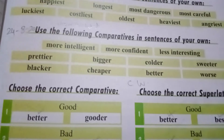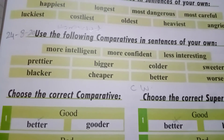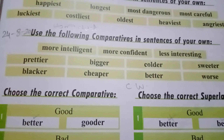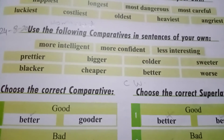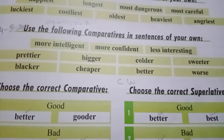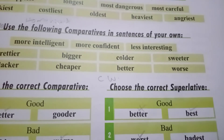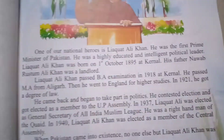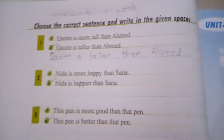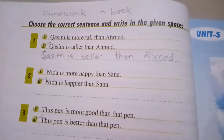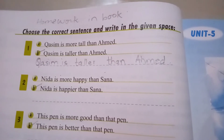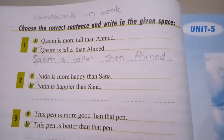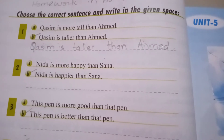In the same way, you will make sentences of these words. I have shared 5 words for you to do in your copy and make sentences using the comparatives. Then we have read something from page number 24: choose the correct sentence and write it in the given space. This is your homework and you have to choose the correct option.